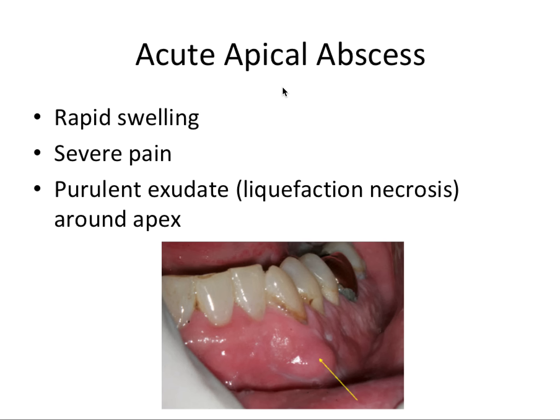Next we have acute apical abscess. This one involves rapid swelling, severe pain, and purulent exudate — basically pus and liquefaction necrosis — around the apex. It has very unique cardinal features, making acute apical abscess relatively easy to diagnose when these things are present.